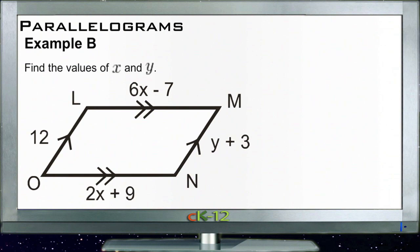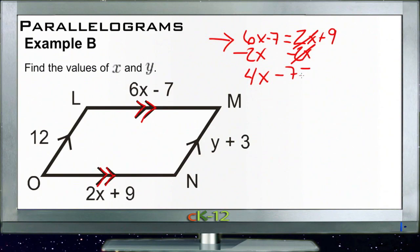So, first let's set 6X minus 7 equal to 2X plus 9, because these two sides are marked congruent. We have more X's on this side, so let's collect the X's by subtracting 2X here and subtracting 2X here. Those will cancel, and we'll have 4X minus 7 equals 9. Then we add 7 to both sides, and we get 4X equals 16. Divide by 4 tells us that X equals 4.